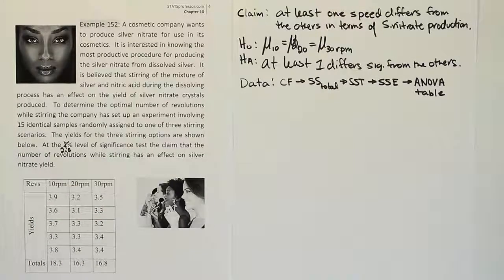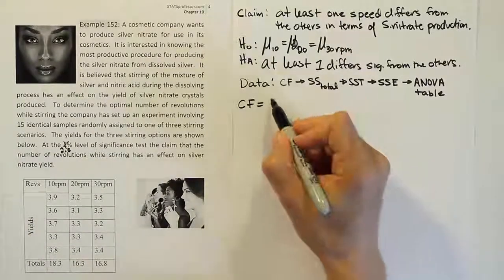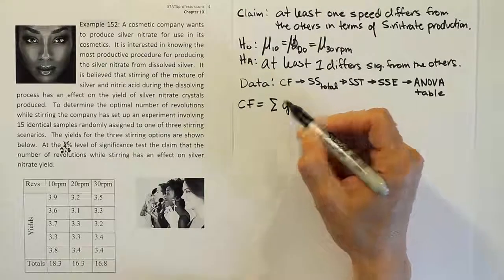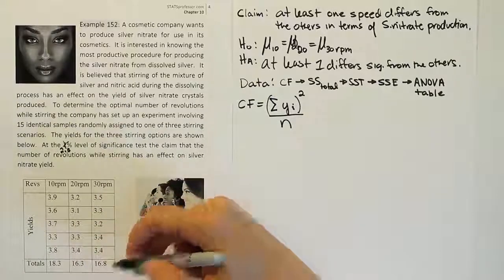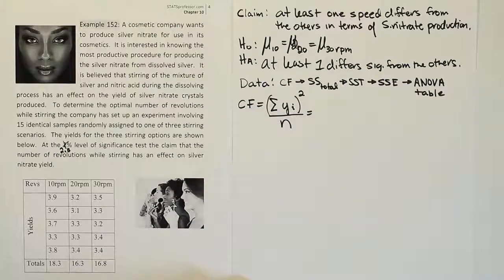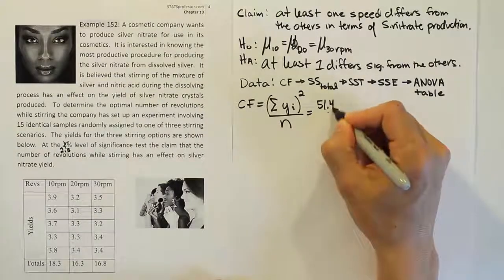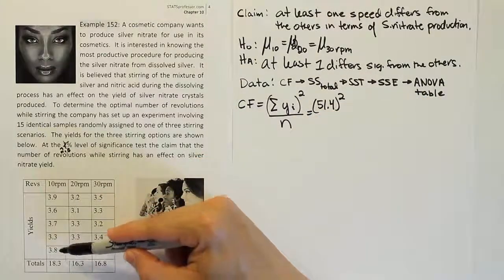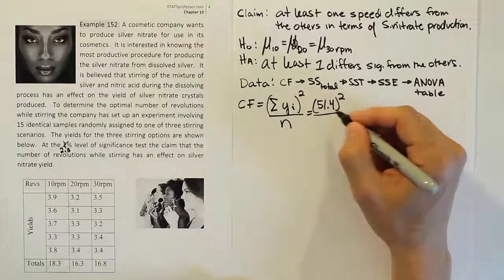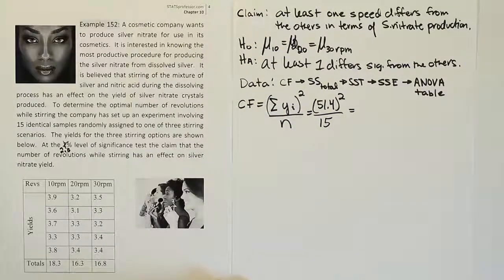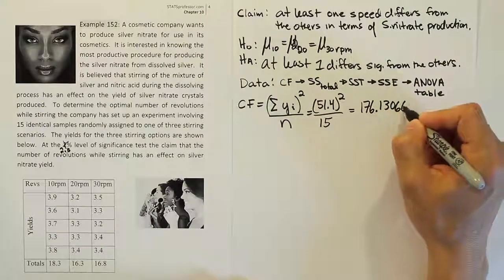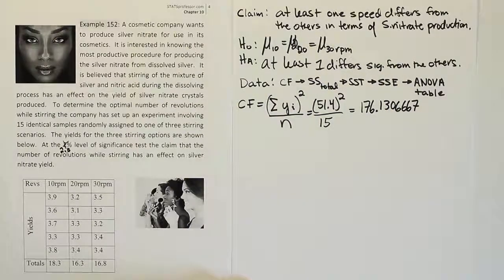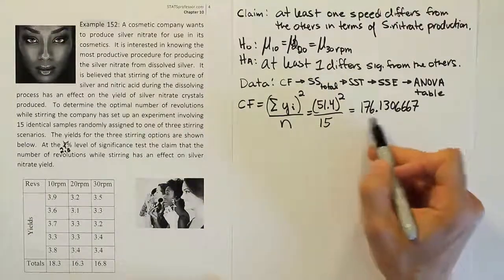They have given us the totals at the bottom, which is good. Remember, the correction factor formula is simply the sum of all the response variable values — we square that sum and then divide by the total number of values in the table, not including the totals. I've worked out the sum of those values already, and I came up with 51.4. So we'll be squaring 51.4 and dividing by 15. If we do 51.4 squared divided by 15, we end up getting 176.1306667. I'm going to store that in my calculator so I can access it easily later.